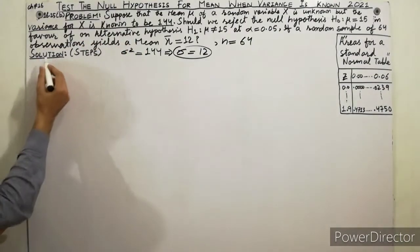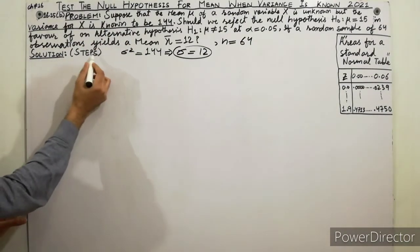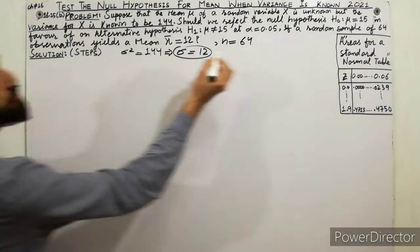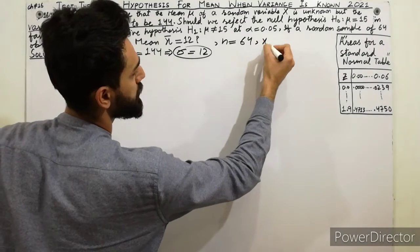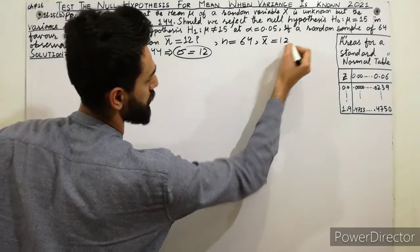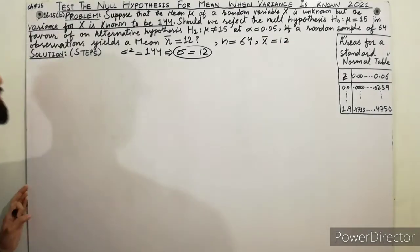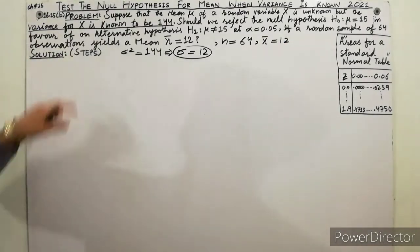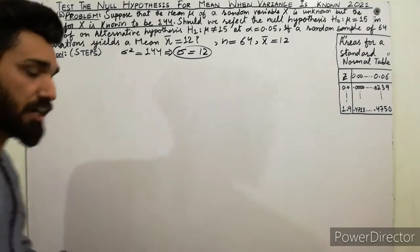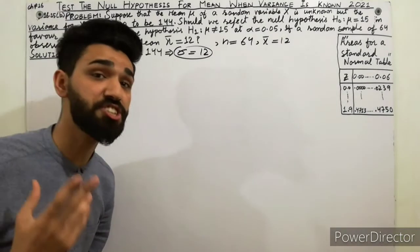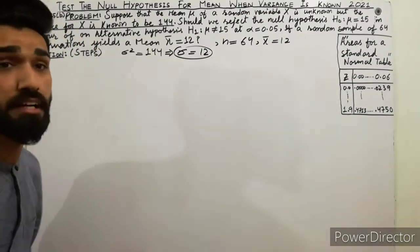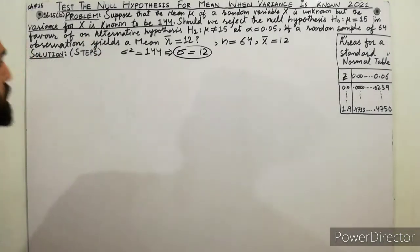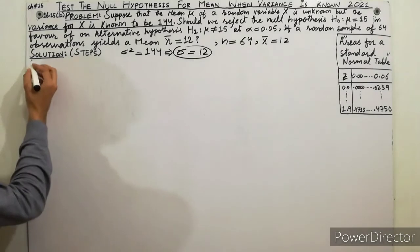The sample mean x-bar is already given here as x-bar equal to 12. Now, following the steps, I will show you the six steps to solve this null hypothesis problem.